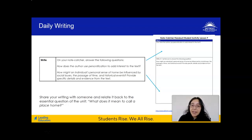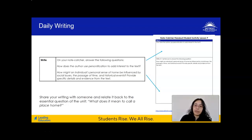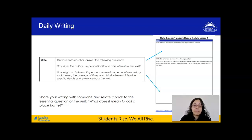Now that we've read, thought, and talked, our last part for today is daily writing. On your note catcher on page 30, you'll write answers to two questions. First: how does the author use personification to add interest to the text? Think about the examples you underlined. Second: how might an individual's personal sense of home be influenced by social issues, the passage of time, and historical events? Provide specific details and evidence from the text in about five to seven sentences. Once you're done, share your writing with someone and relate it back to the central question of the unit: what does it mean to call a place home?